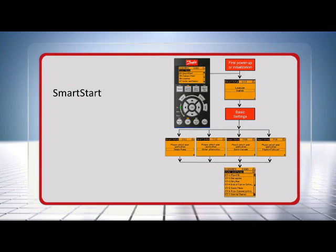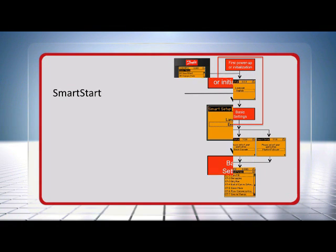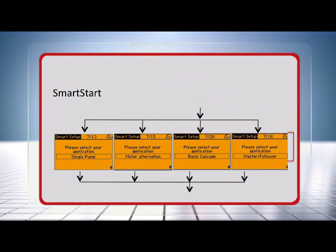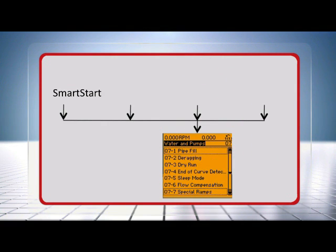The SmartStart wizard guides the user through the entire configuration process. It starts with the language, motor parameters and other basic settings. After this, the user can choose between the following four applications: single pump or motor, motor alternation, basic escape, and master follower. At the final step, the user is asked whether he wants to configure one of the most common water and pump features or wants to quit the wizard.